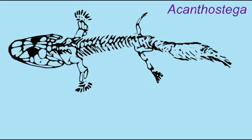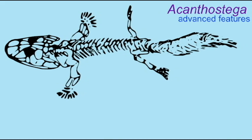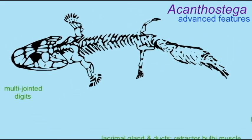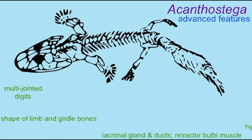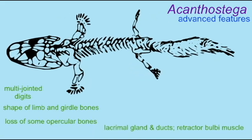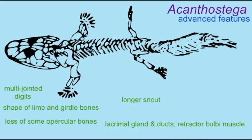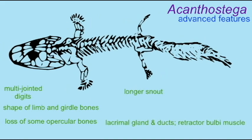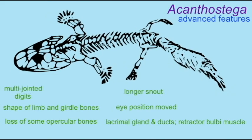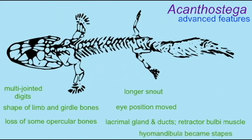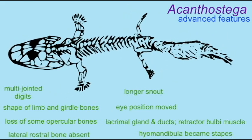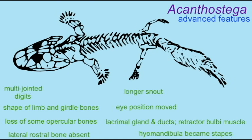The late Devonian fossil Acanthostega is a tetrapod and has a number of advanced features not found in any Sarcopterygian fish. It possesses multi-jointed digits, and the shape of its limb and girdle bones were advanced. It lost some opercular bones and the lateral rostral bone of the skull. It possessed a longer snout. Its eye position had been modified, and with the modification of the eyes apparently were a lacrimal gland and ducts, the retractor bulbi muscle, and the hyomandibula had become the stapes. These are all advanced features of Acanthostega.